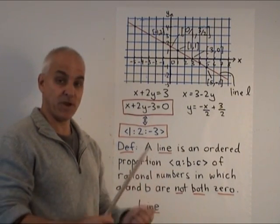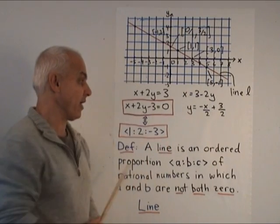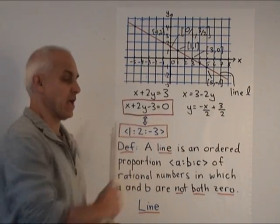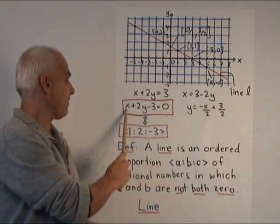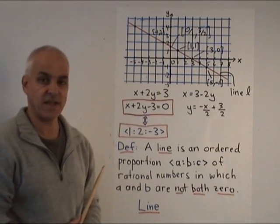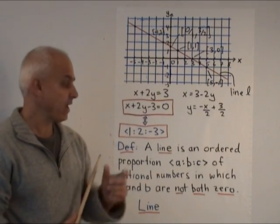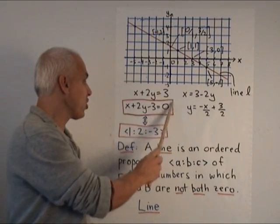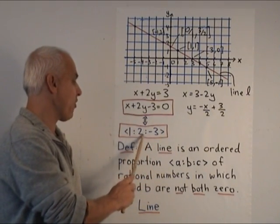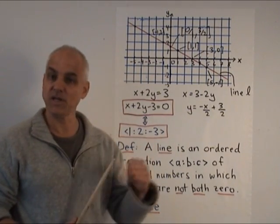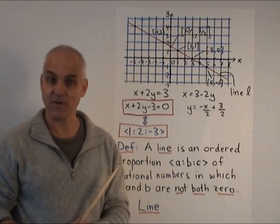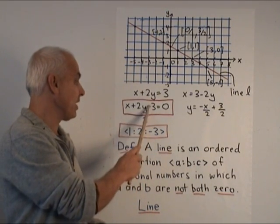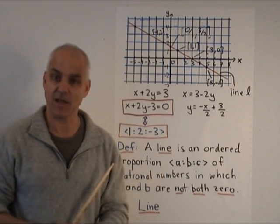Now that equation can be rewritten in a number of ways, such as these two ways, but we prefer this standard form, where we have the x, the y, and the constant, all on the left-hand side. In this way, we can encode this information by the three coefficients, which are only determined up to a scalar. So it's the proportion 1 to 2 to minus 3, which specifies this line.